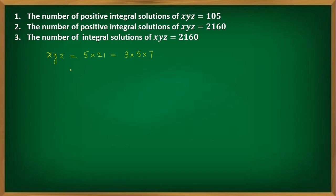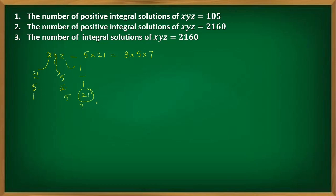How many solutions are there? We are going to use the method of distribution. For example, if x = 21, y = 5, and z = 1, that gives one solution: 21 × 5 × 1 = 105. Or you can write 5, 21, 1 or 1, 5, 21 — like this. Now you can think of 21 as two balls numbered 7 and 3, so you are putting these two balls together for x.